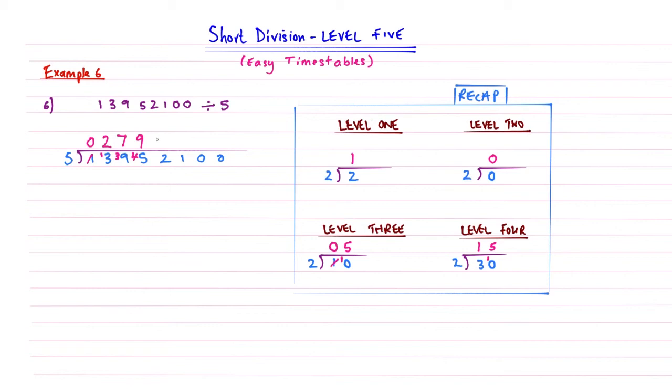So 5s into 2. Well, 5's too big. So this is a level 3 skill. So it's going to be a 0. And then carry the 2 there. Right. 5s into 21. Well, that's 4 times. Because 4 5s are 20. Carry my 1. Right. This gets a little bit easier now. We're in the home straight. 5s into 10 go twice. Because 2 times 5 is 10. Then 5s into 0. This is a level 2 skill. 5 doesn't go into 0. So it's a 0. And so there we have it. That's example 6. And this is a long example using short division.